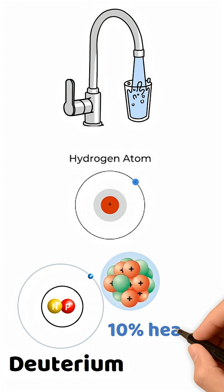That tiny extra neutron makes it 10% heavier. So, where do we get it? We don't make it, we filter it.